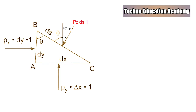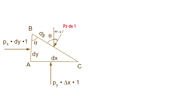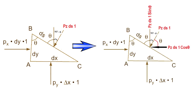We resolve components in the x and y directions. The angle is theta, and pressure Pz acts on face BC perpendicular to it. The total angle is 90 degrees, so one angle is 90 minus theta. Drawing a horizontal line, the angle between the force Pz and the horizontal direction is theta, since the remaining angle is also theta at the 90-degree corner.